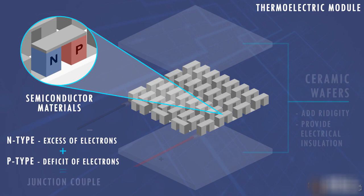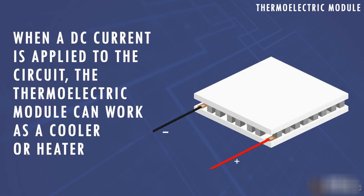When DC current is applied to the circuit, the thermoelectric module can work as a heater or cooler depending on the direction of the current.